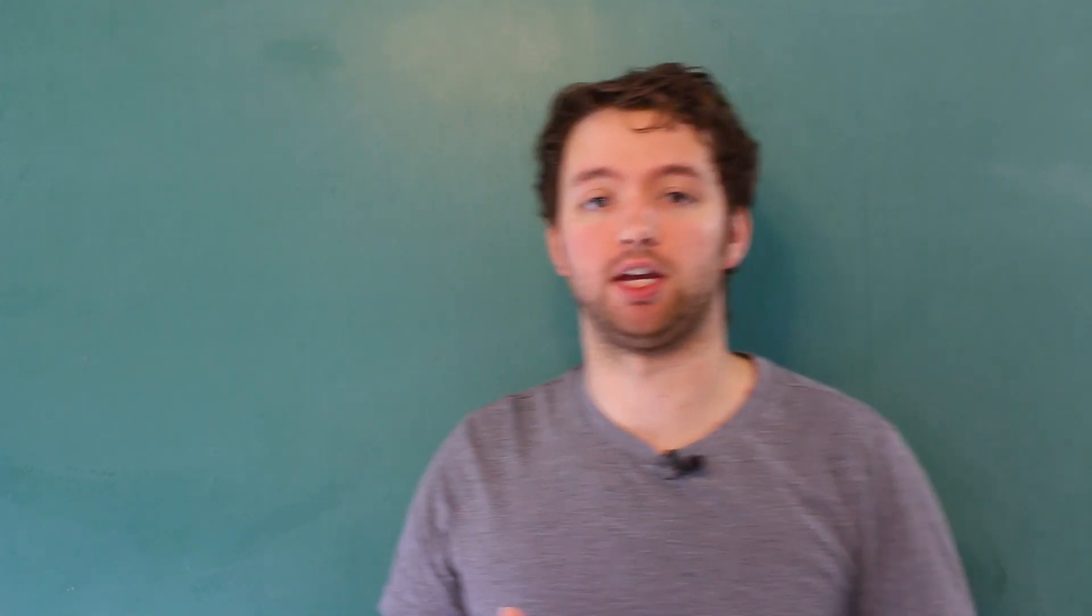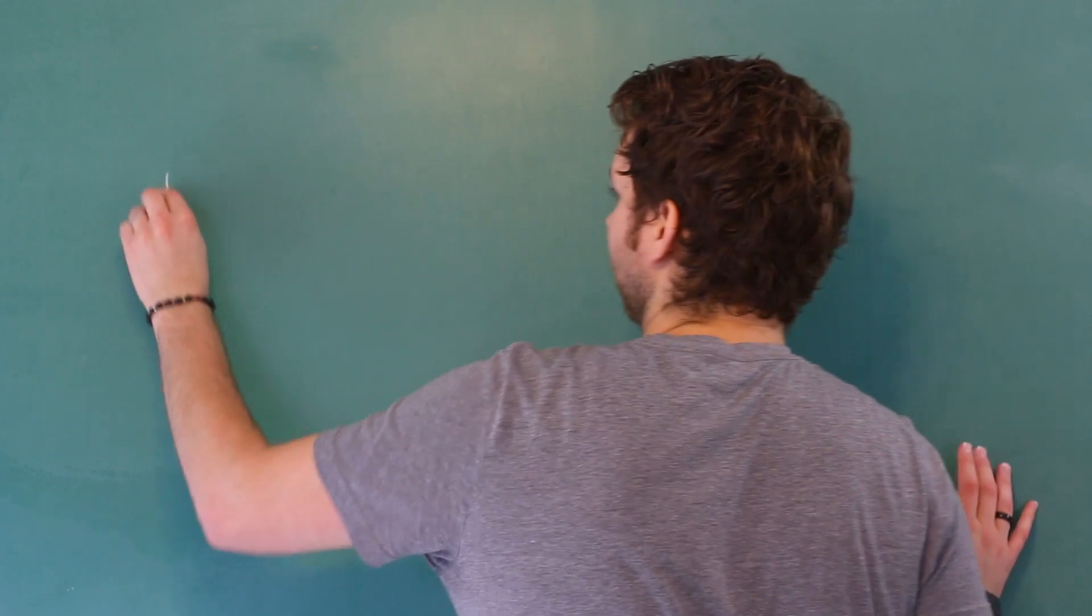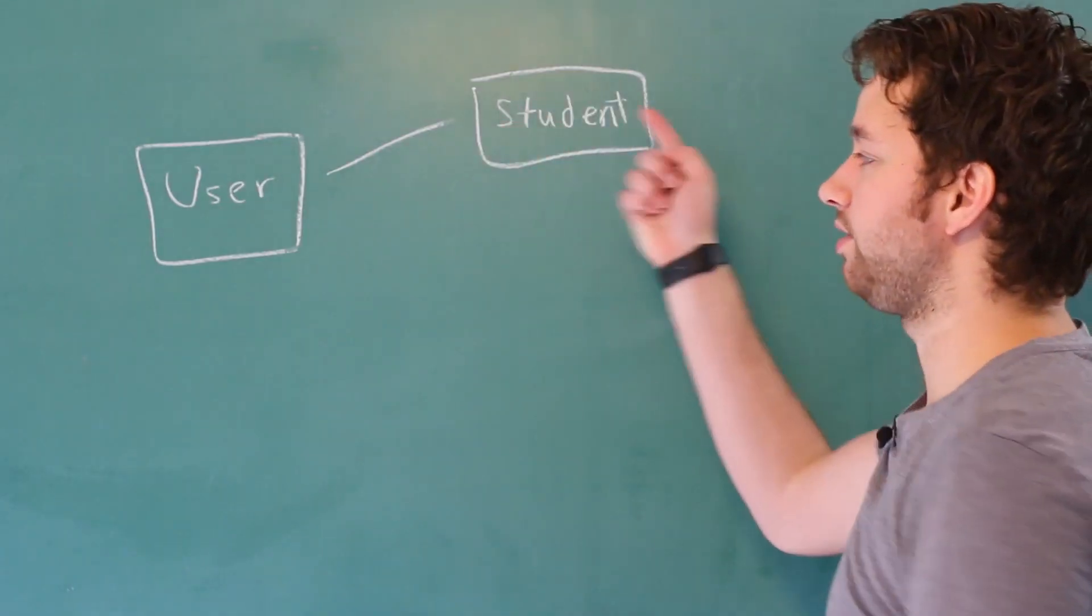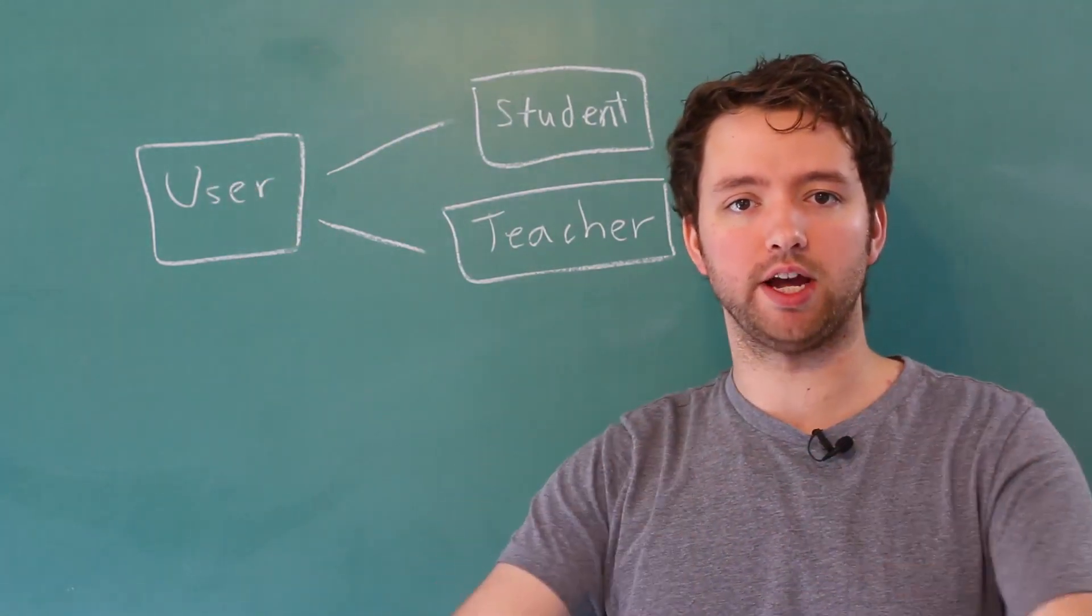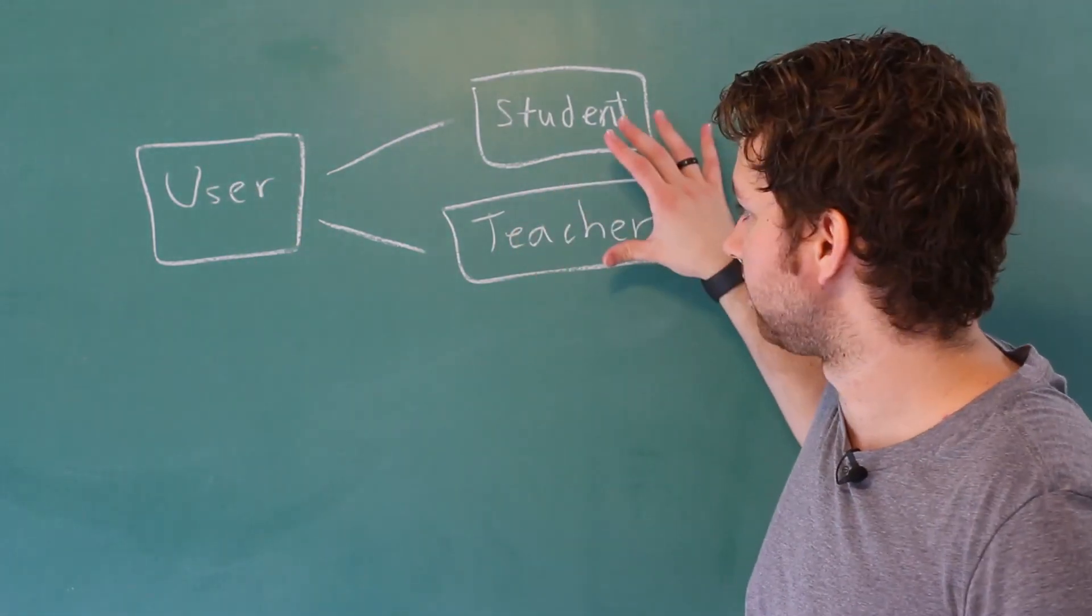So in object-oriented programming, we can have an inheritance hierarchy. Imagine we have a user class. Then we inherit this user class from student. Anything defined in the user class is going to float down to the derived classes.